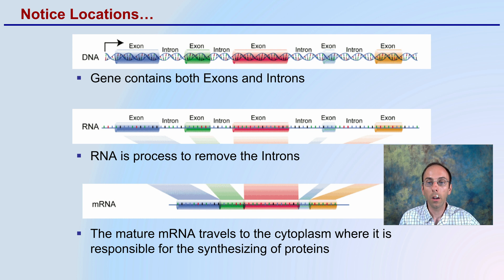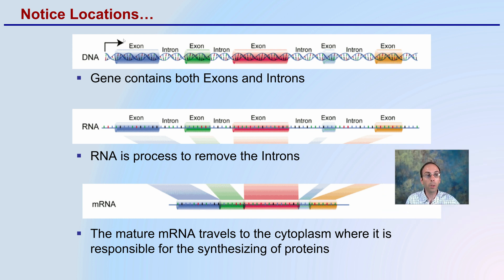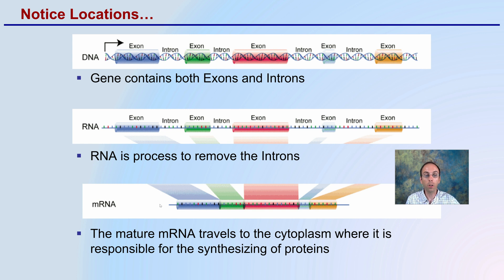Looking here, we want to notice the locations of everything. The gene contains both exons and introns — that's the full DNA. The RNA is processed to remove the introns. That final product — the messenger RNA — will only contain the exons. This mature messenger RNA, where 'M' stands for messenger, travels to the cytoplasm where it's responsible for synthesizing important proteins for the body.